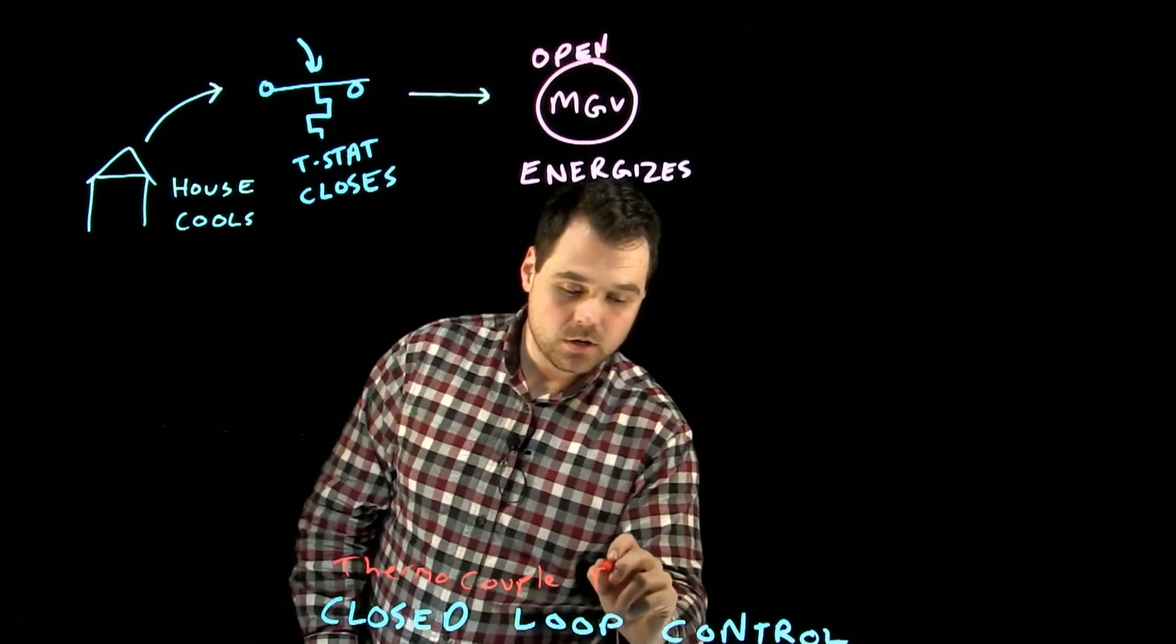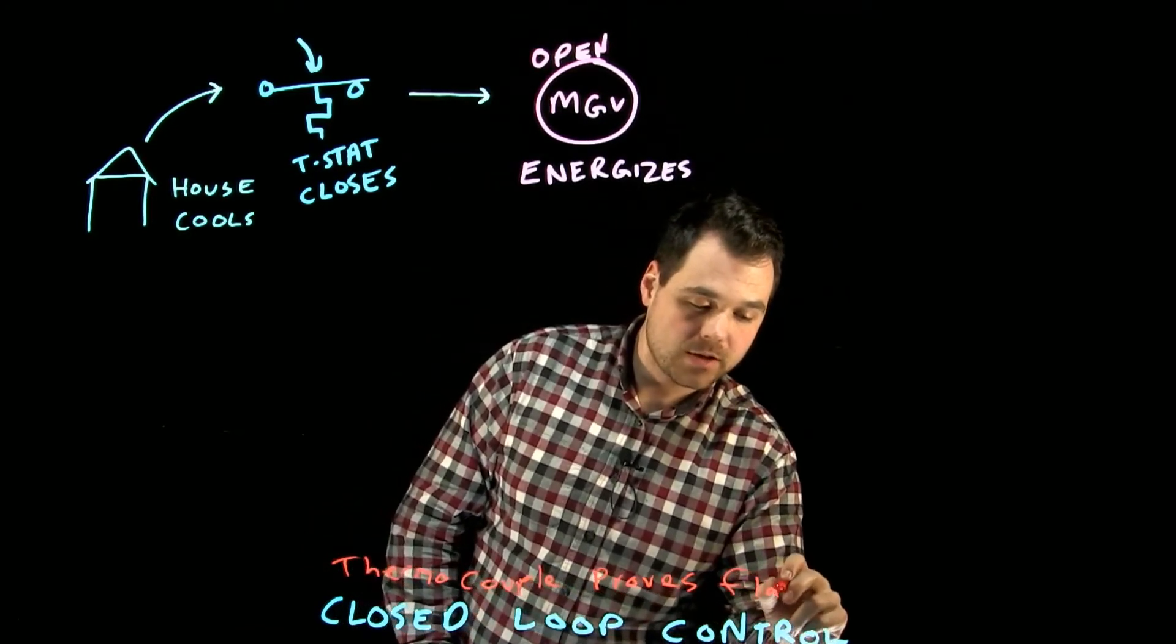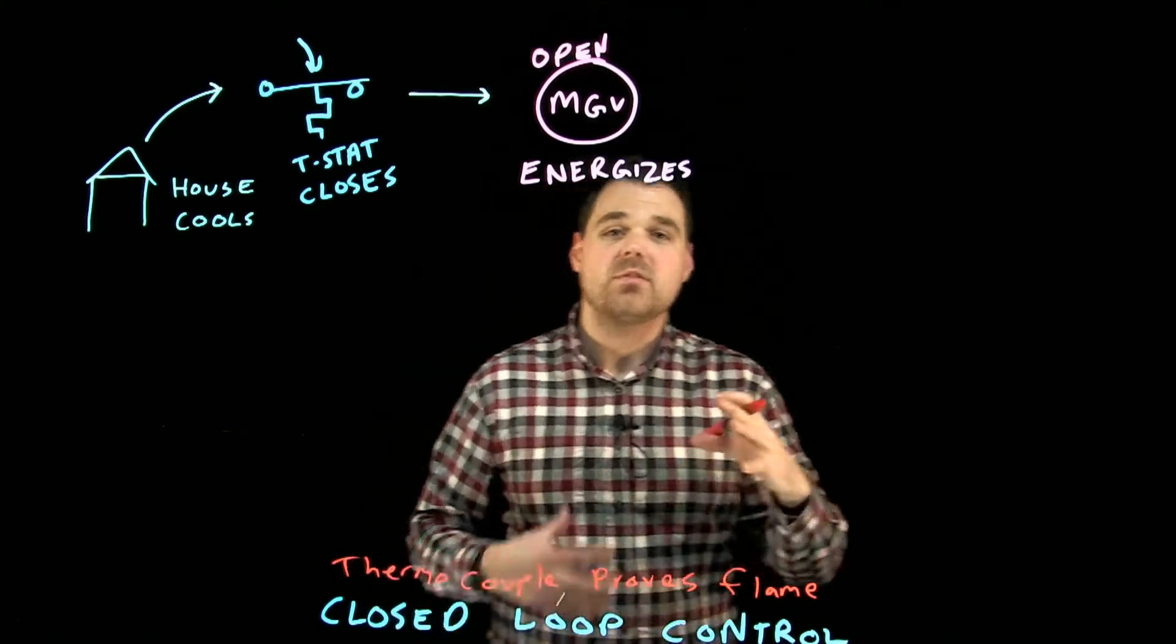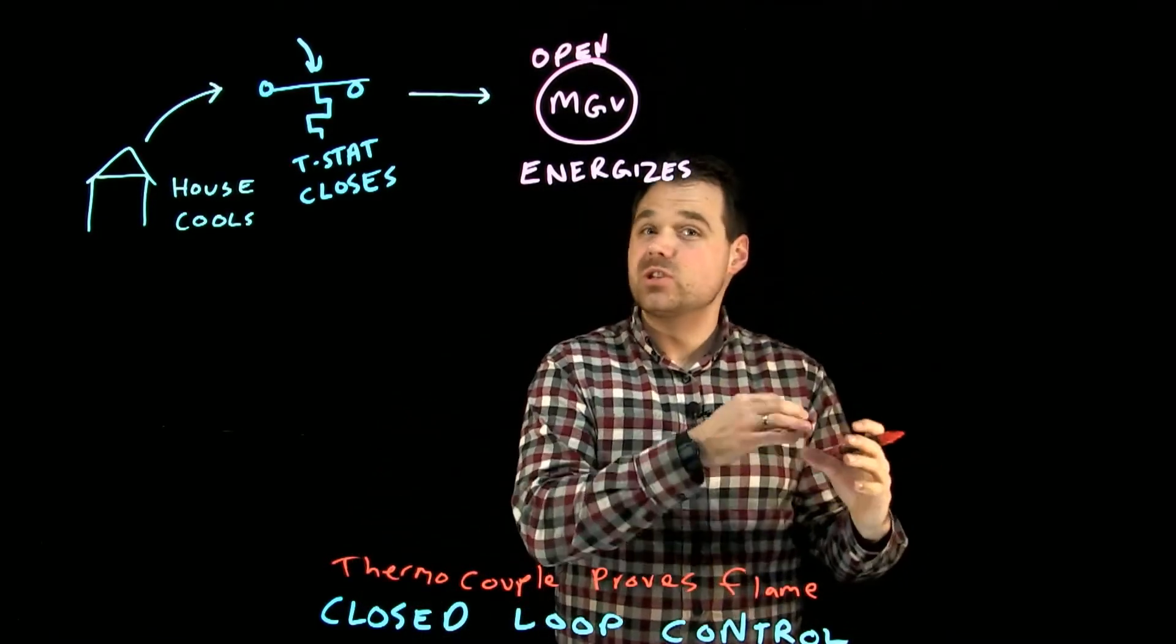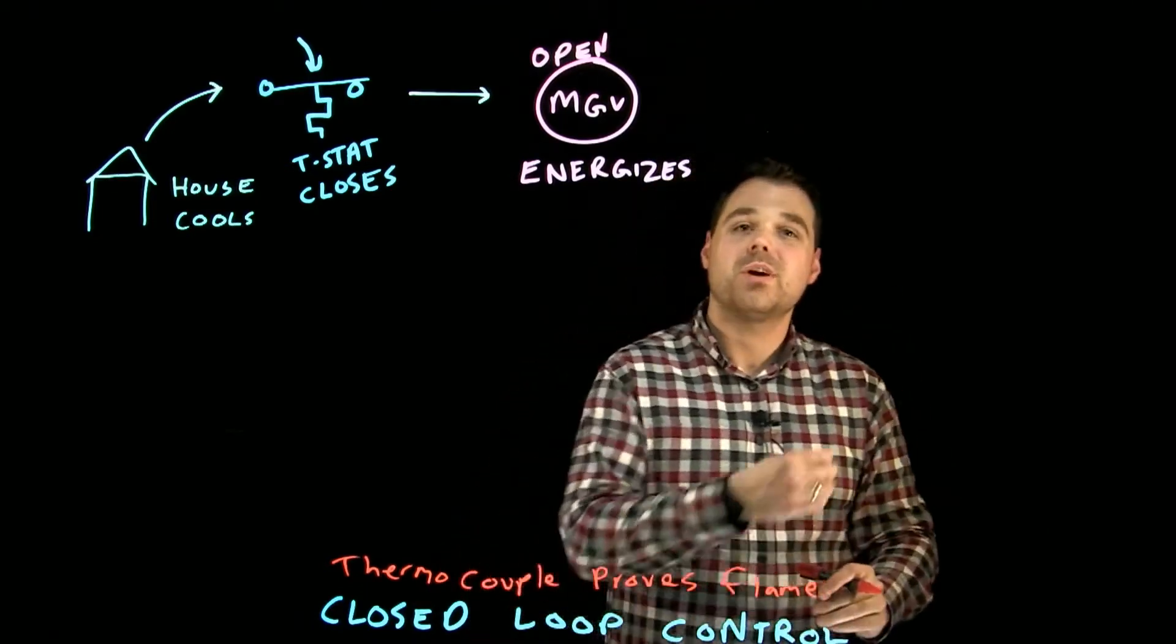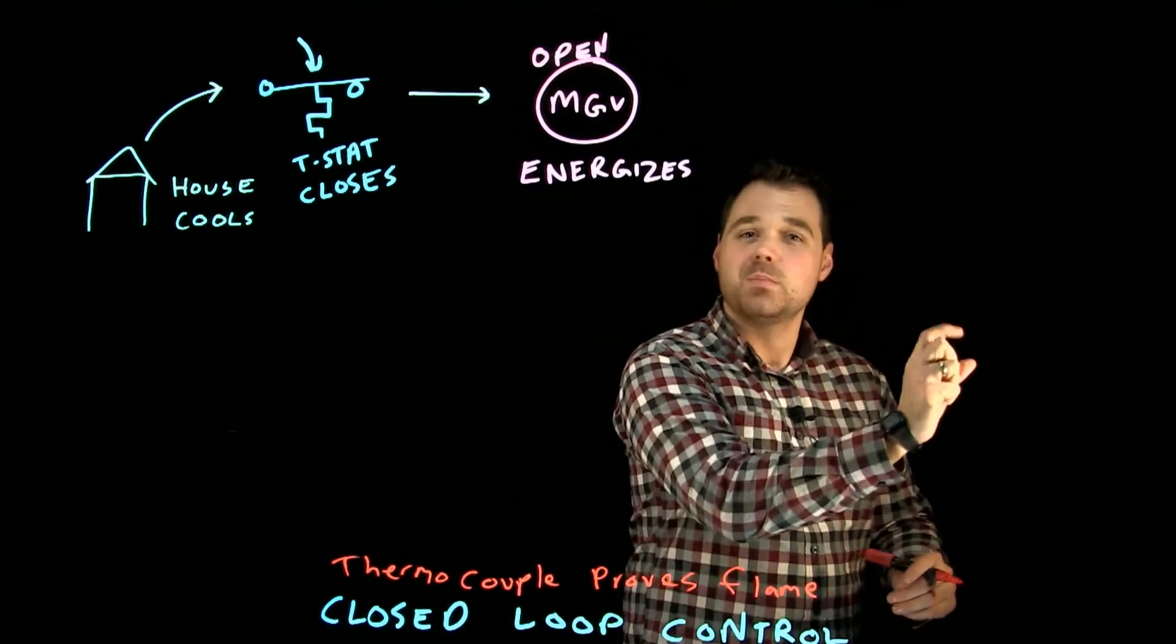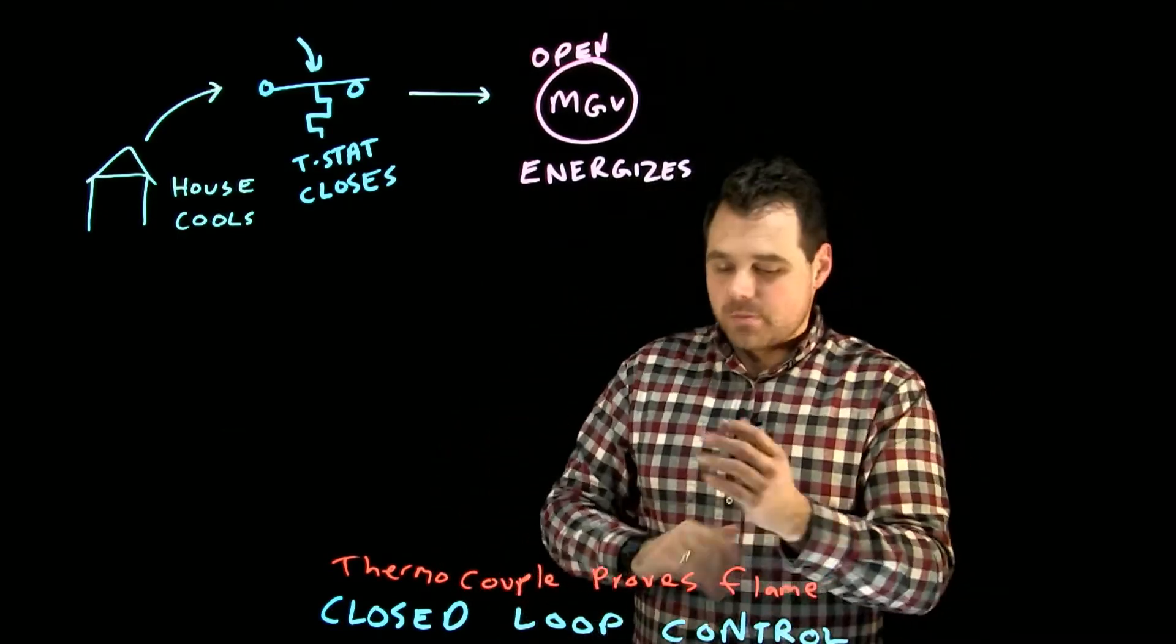If the thermal couple wasn't there proving the flame, then that gas valve, the safety gas valve which is not an electronic component, would actually close. This thermal couple is providing power to that power unit, keeping that safety gas valve open, so our main gas valve opens.